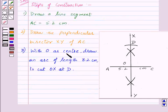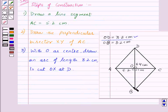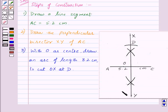Now, again, we know that OB is also 3.2 cm. So, we will take O as center and radius 3.2 cm. We will draw an arc to cut OY at point B. So, we got the arc and the point B.